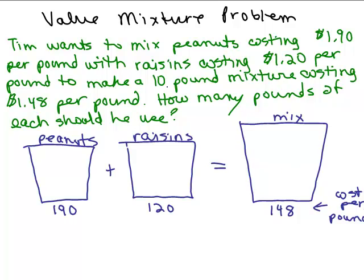Well, it says that I want 10 pounds in the mixture right here, 10 pounds in the mixture. So, in the mixture, I know there are going to be 10 pounds. So, how am I going to define my variables using only one variable? How about I let P represent how many pounds of peanuts I'm going to use?